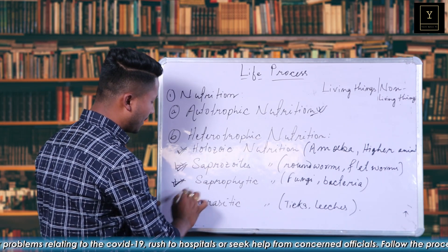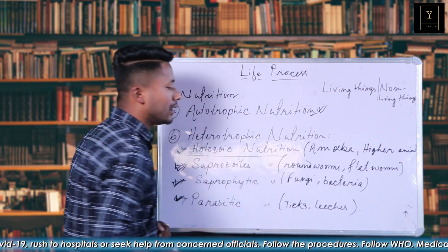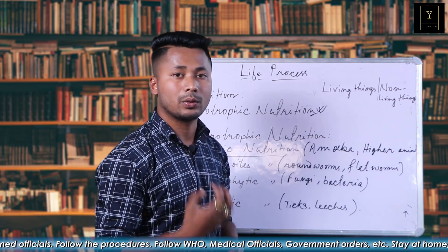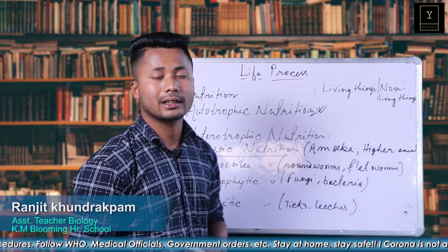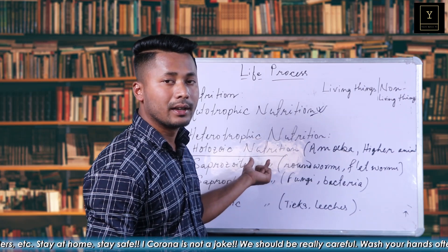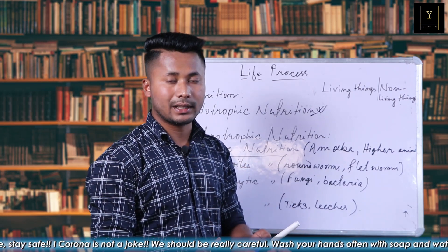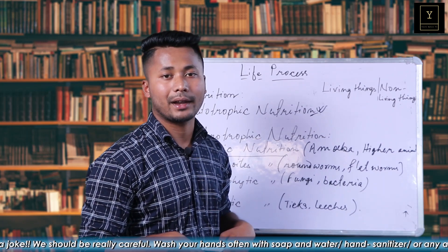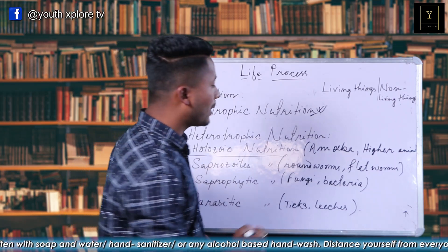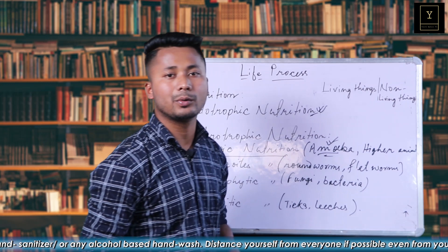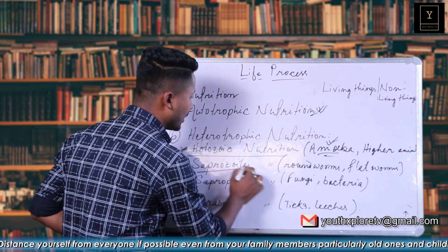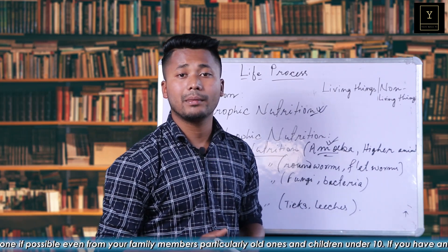For example, holozoic nutrition — it is a type of heterotrophic nutrition where food material is taken inside the body and utilized. There is food material inside the body, and this applies to single-cell organisms and human beings. A lot of nutrition is used and organic waste is produced.